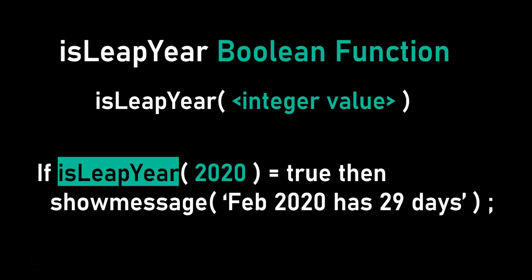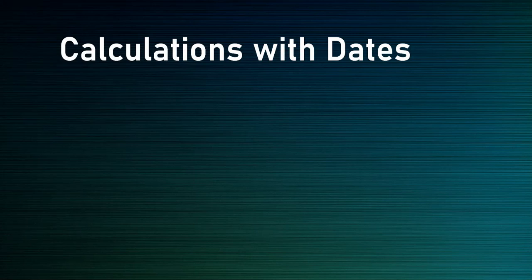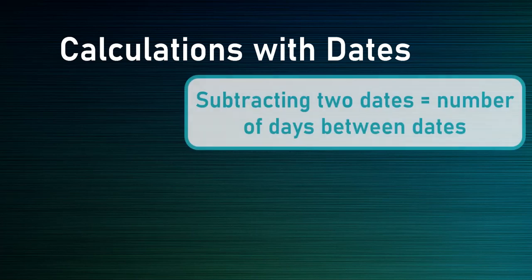There is the isLeapYear Boolean function — you don't have to calculate it yourself. Now for calculations with dates, there are three main ones we can look at. The first and most commonly used one is when we subtract two dates — the answer will be the number of days between those two dates.